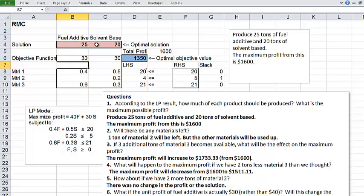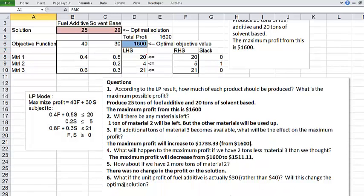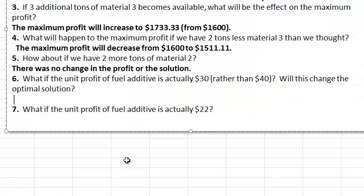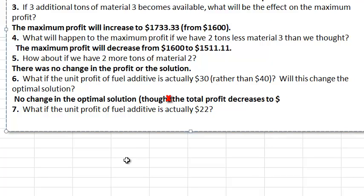Here, I'm going to change it to $30 and let's see what happens. Oh, well, no change. Making 25 tons, 20 tons as before and of course the total profit is lower because each ton of fuel additive gives you $10 less profit than before, $30 as opposed to $40. So the total profit will of course be changed. But you're not doing anything different. So the recommendation will not change in this case. So back to the original sheet. And here, we'll answer the question, no change in the optimal solution. The total profit decreases to $1,350.